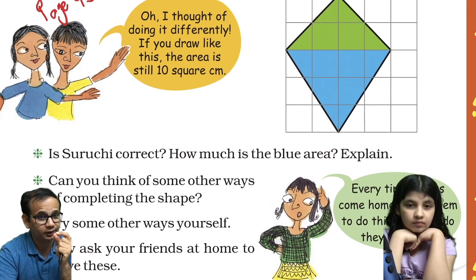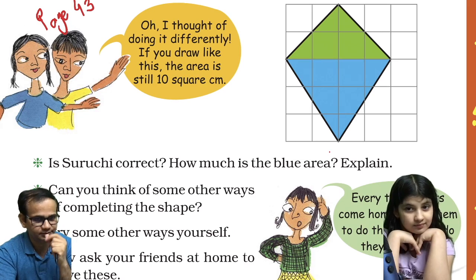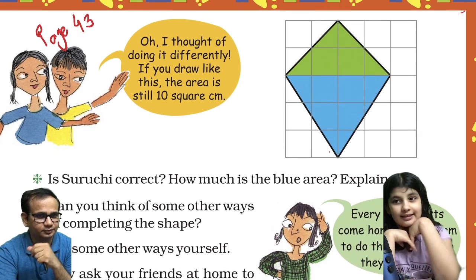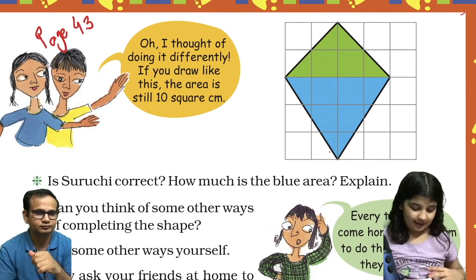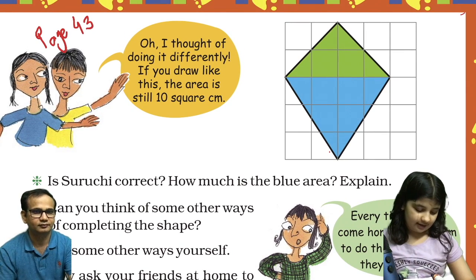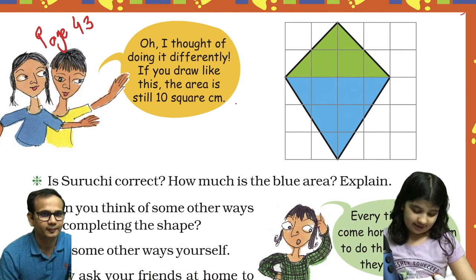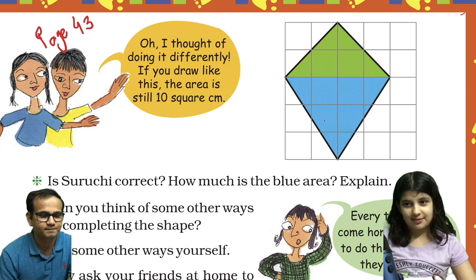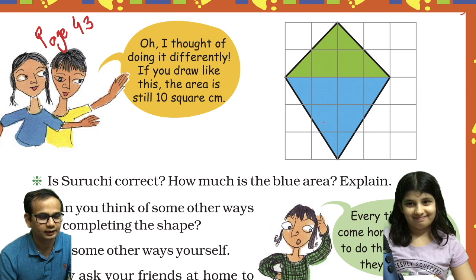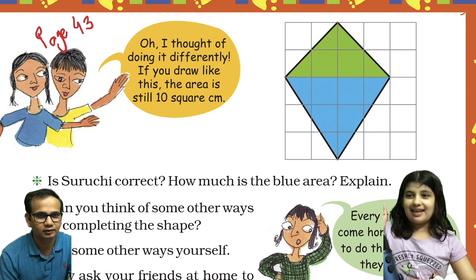Now, is Suruchi correct? How much is the blue area? Let us explain. The blue area is 6 square centimeters. Let me explain how.